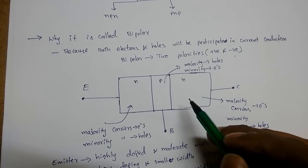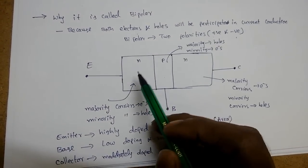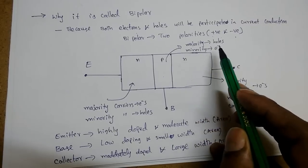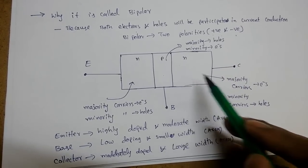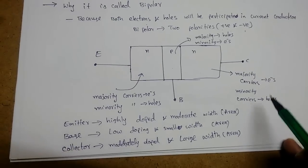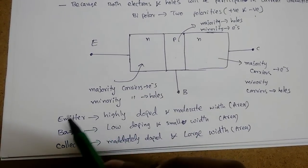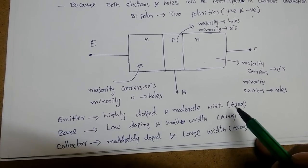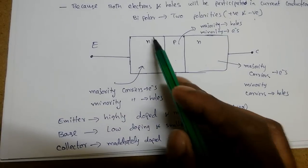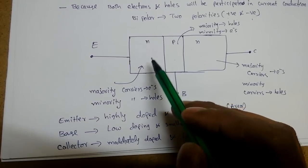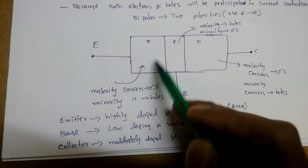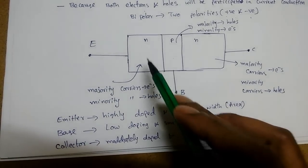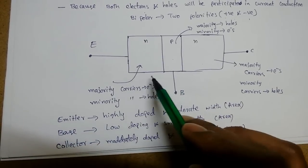In N-type semiconductor the majority carriers are electrons and minority carriers are holes. For P-type, majority carriers are holes and minority carriers are electrons. The emitter is heavily doped and has a moderate width or area. The reason it is highly doped is that it is the source of either electrons or holes — being heavily doped, it provides a large number of carriers for current conduction. Area-wise it is moderate compared to the other two regions.